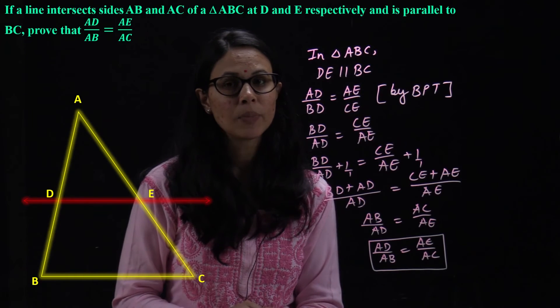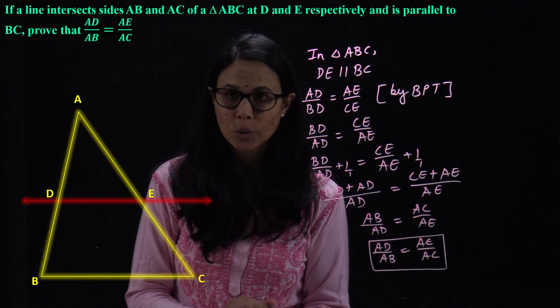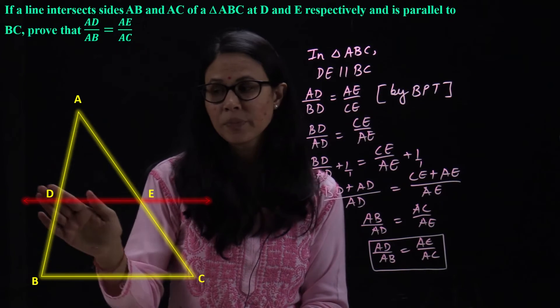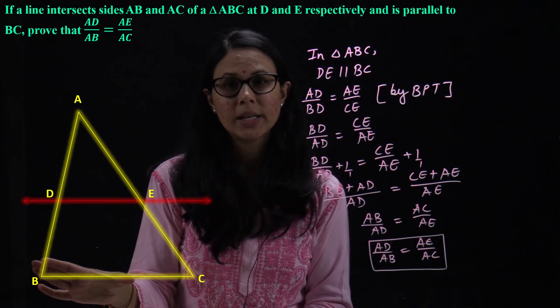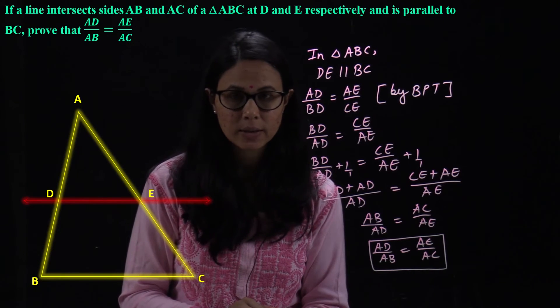Now, to solve this question, we have to apply BPT theorem - Basic Proportionality Theorem. According to the theorem, if in a triangle any line is parallel to a side, then the other two sides are divided in equal ratio.